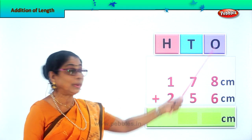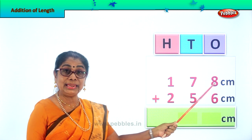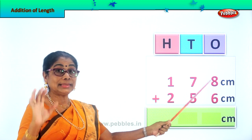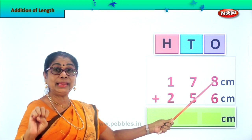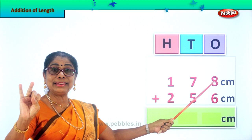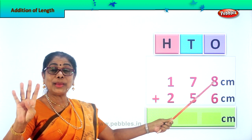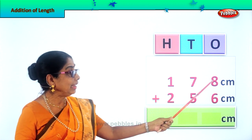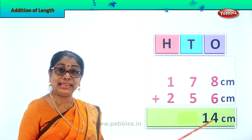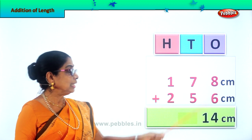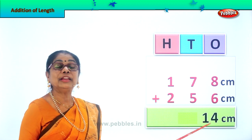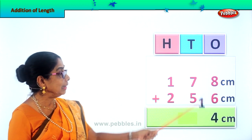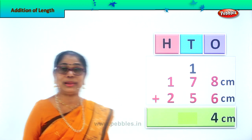Now let's go to the 1's place. We have 8 plus 6. 8 plus 6 is 14. In the 1's place we cannot put 14. We leave the 4 in the 1's place, we take the 1 — that is 1 ten — and we put it in the 10's place.